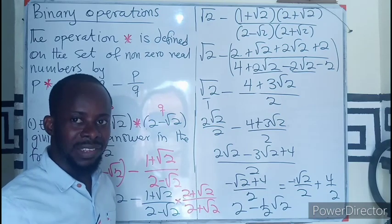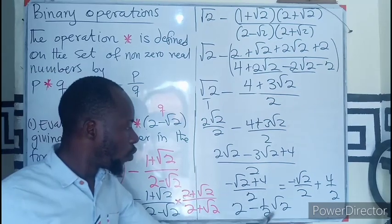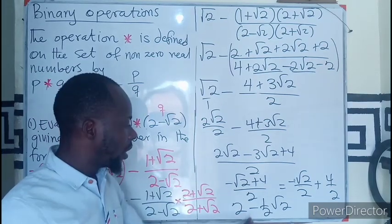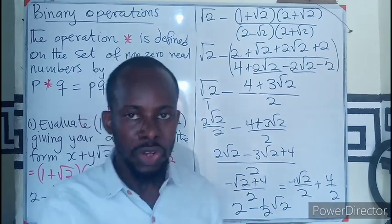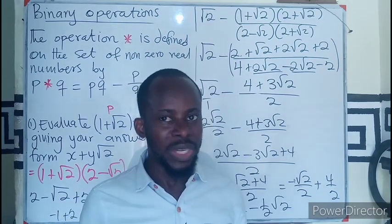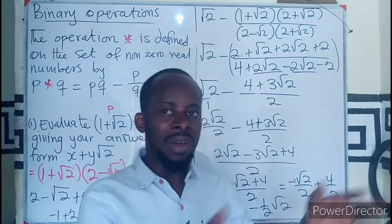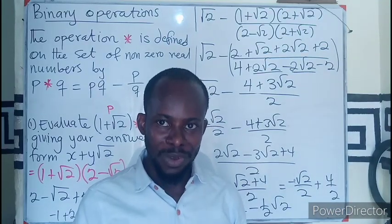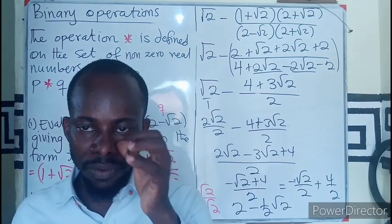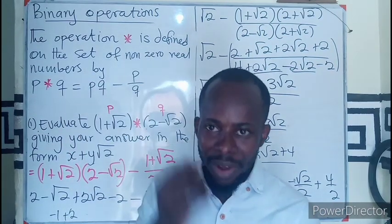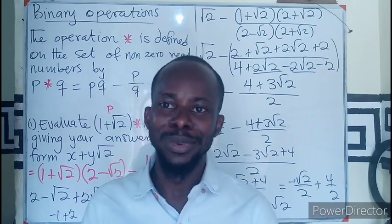The first term x is therefore two, and the second term y, which is the coefficient in front of root two, is minus one-half. So x equals two and y equals minus one-half. This is a set evaluated in a binary operation — using the operator to operate on elements from another field of mathematics. I hope you understood the concept. If you found this educational, please like, share, comment, and subscribe if you are new to this channel. God bless you, bye.